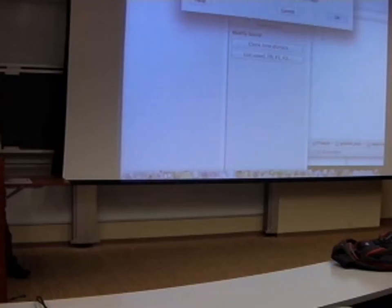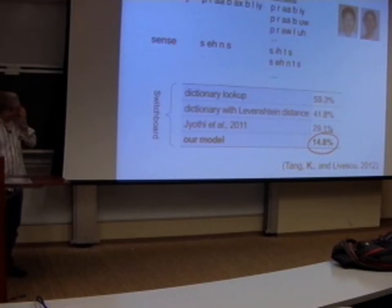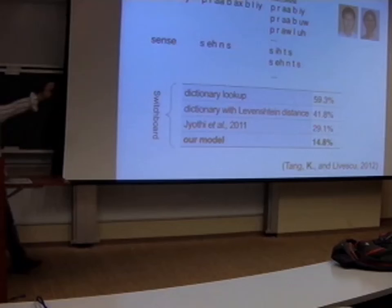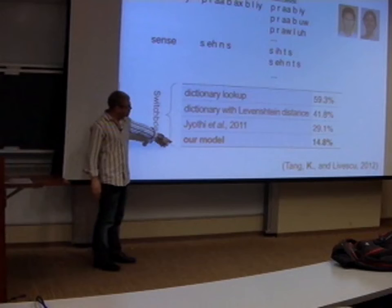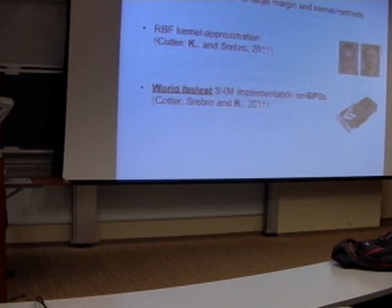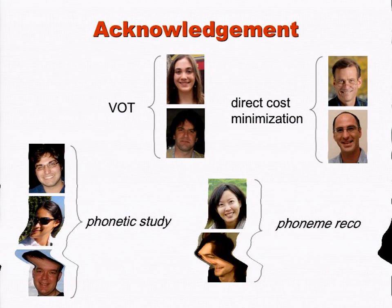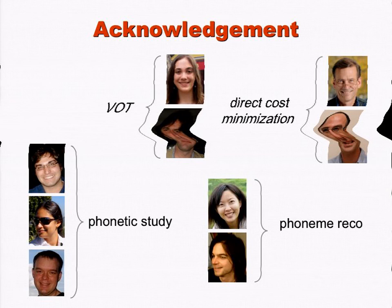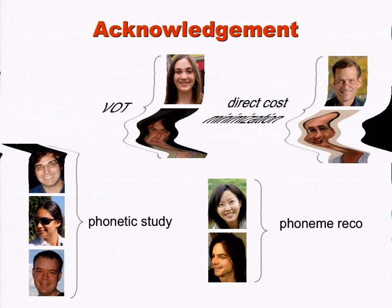Other work includes pronunciation modeling — going from phonemes to words — where we reduced error from 60% (dictionary lookup) to 14%. I also have work on speech intelligibility before and after chemotherapy. Collaborators: David McAllister and Tamir Hazan for direct loss minimization; KT and Morgan for VOT; Chiang and Mark for phoneme recognition; Jeremy, Natalia, and Matt Goldrick from Northwestern University for the phonetic study.